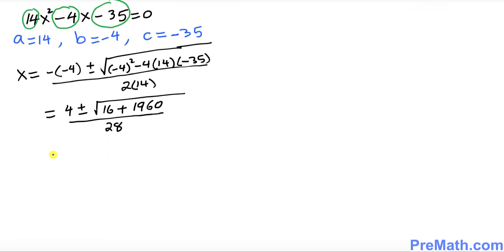Adding inside the radical: 16 plus 1960 gives 1976. So we have 4 plus or minus the square root of 1976, divided by 28.